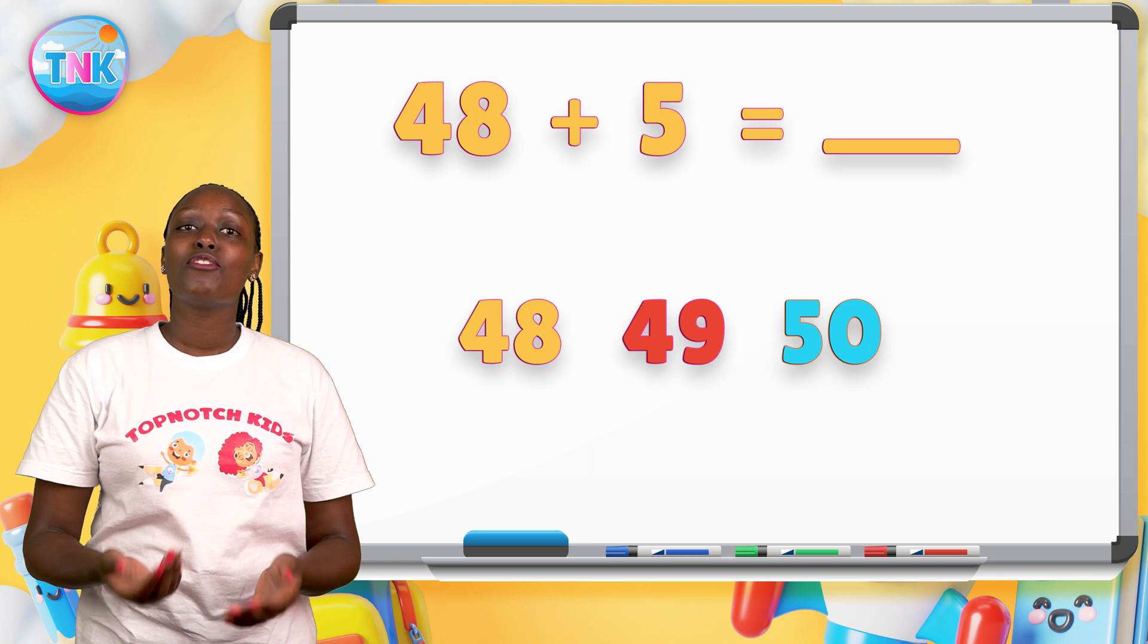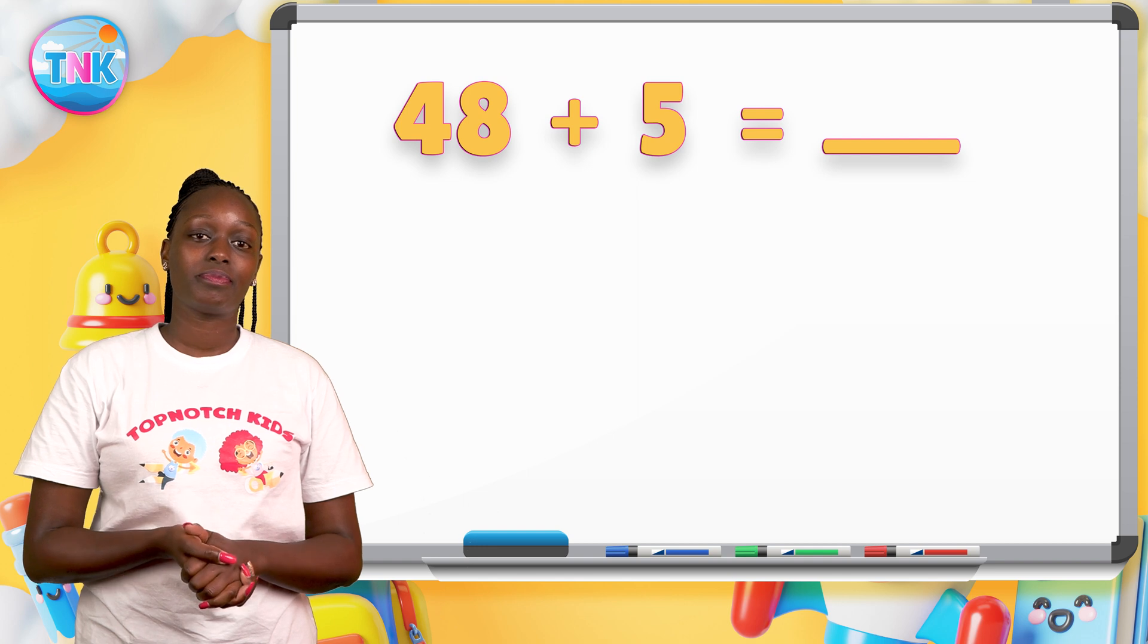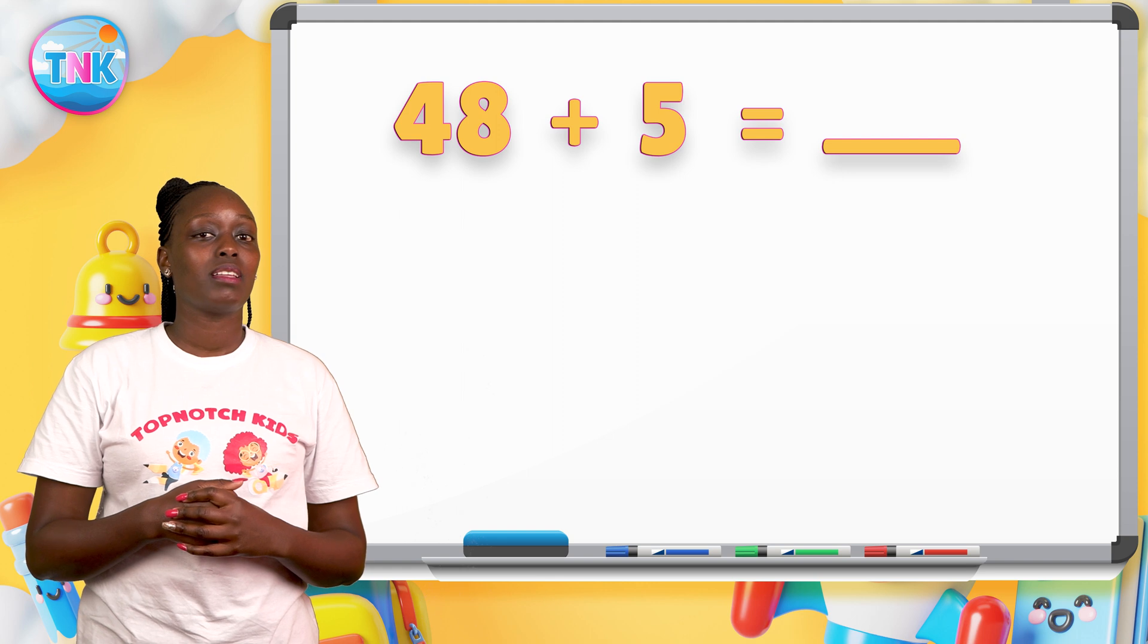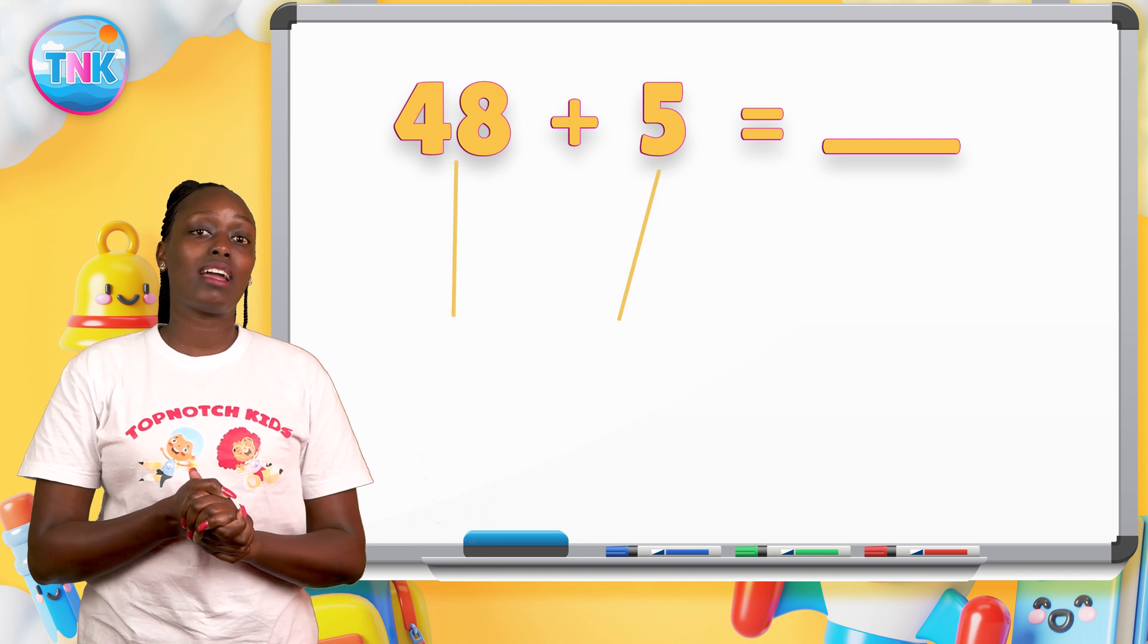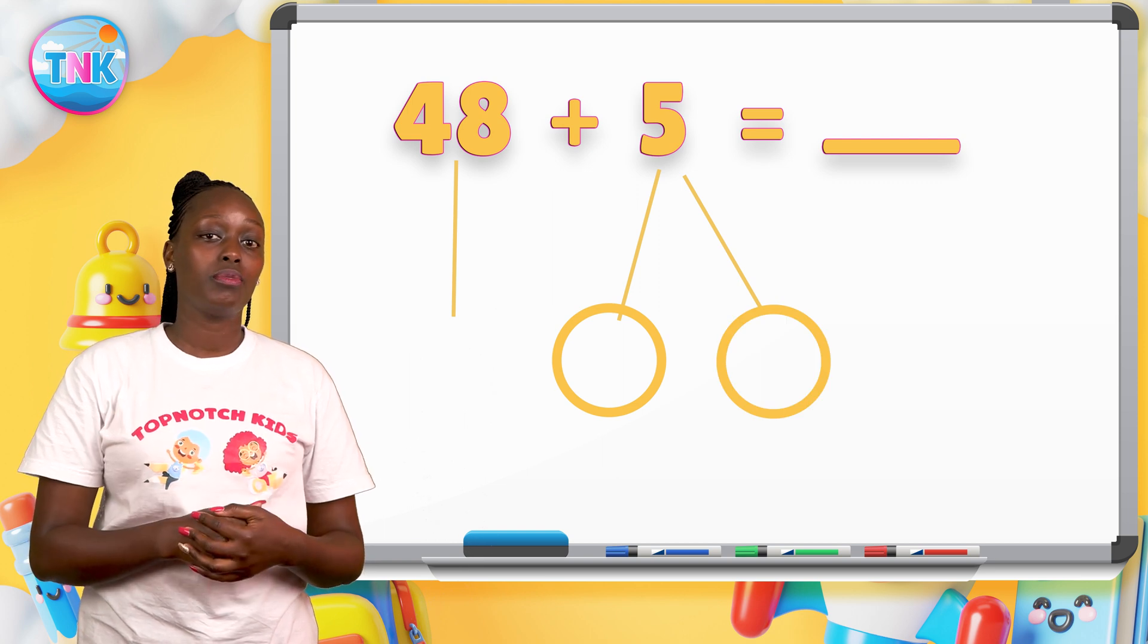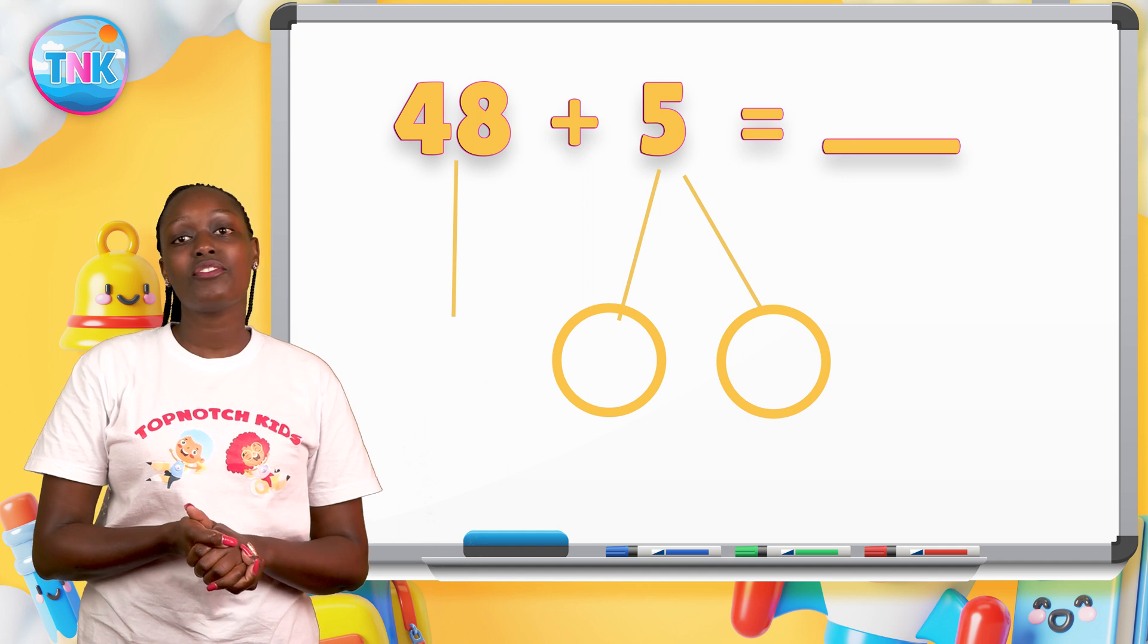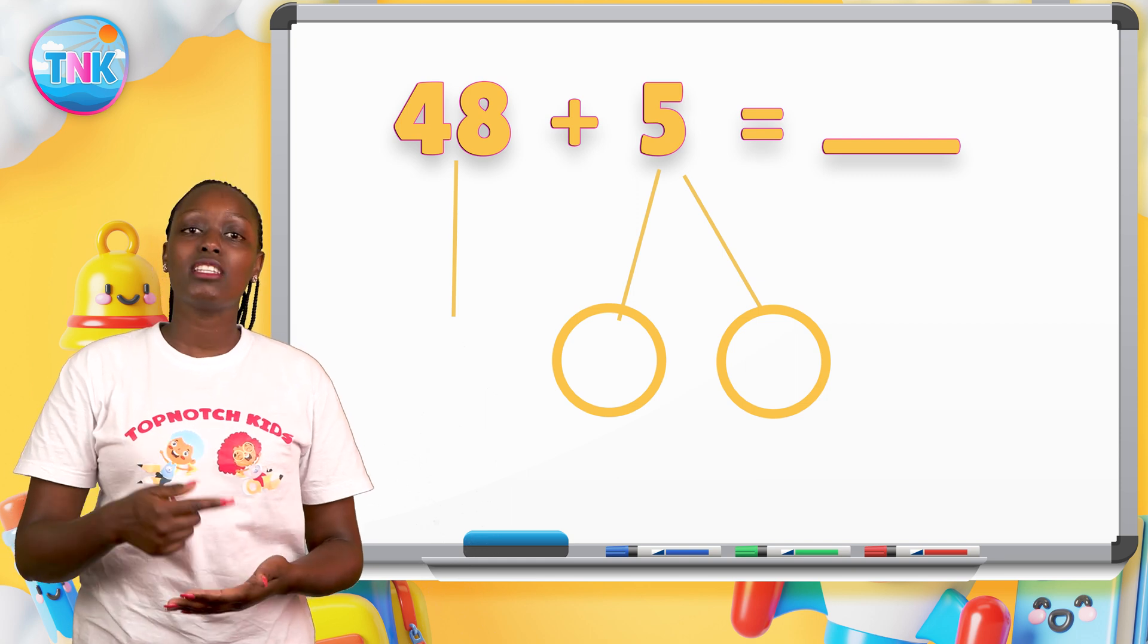So we write forty-eight plus five equals dash. We need to find the answer of the dash by breaking apart. We will split number five into two drawing arrows from five. Circle each arrow, break the first forty-eight to the nearest ten, which is fifty.